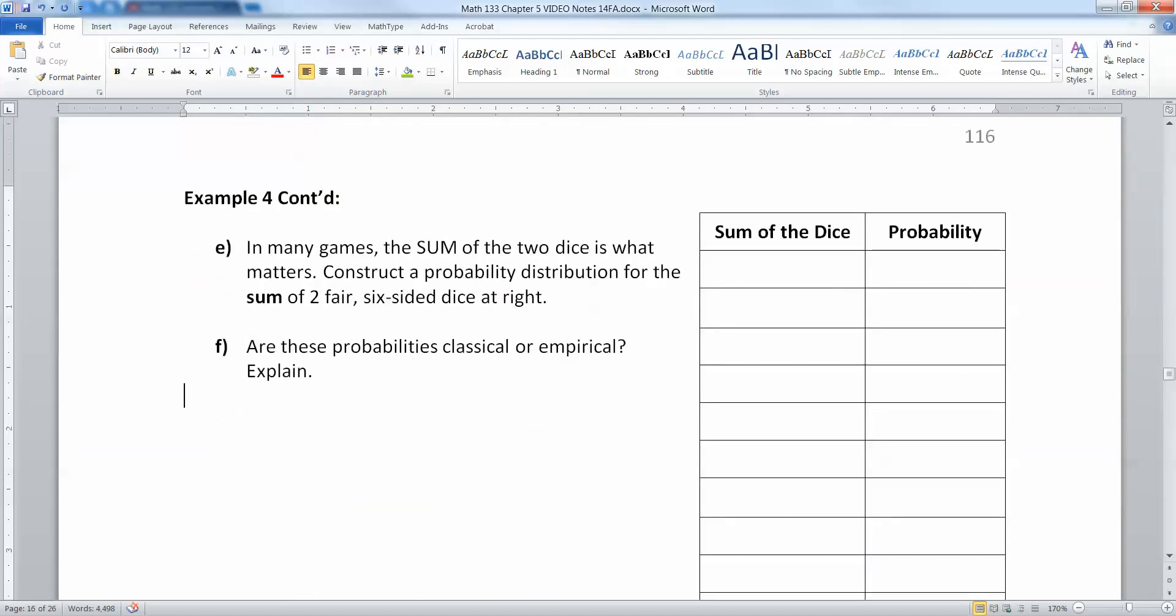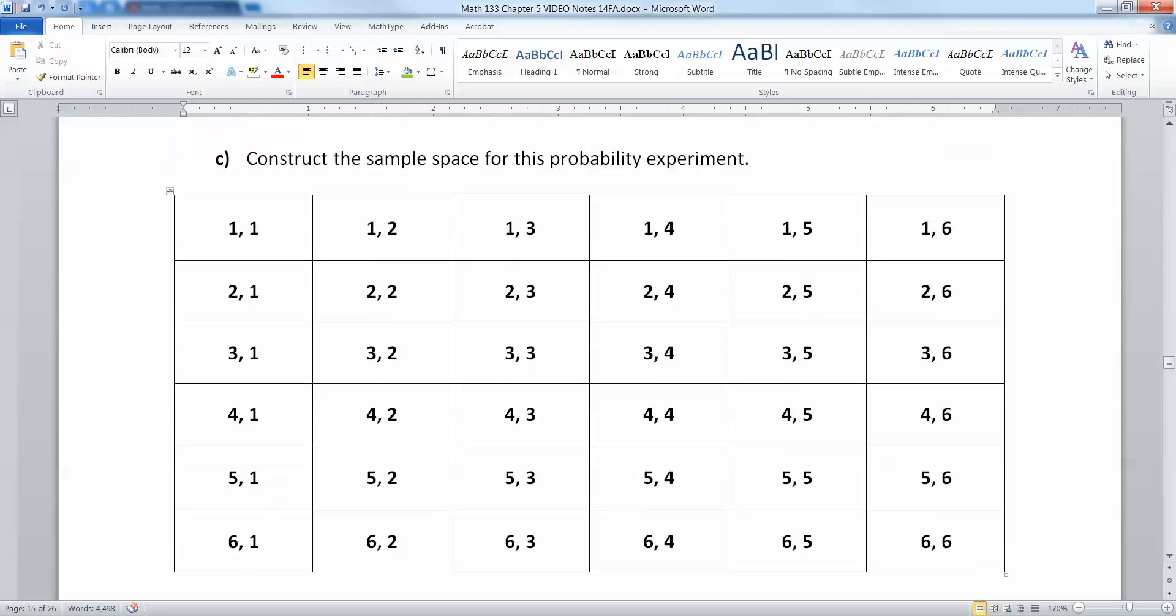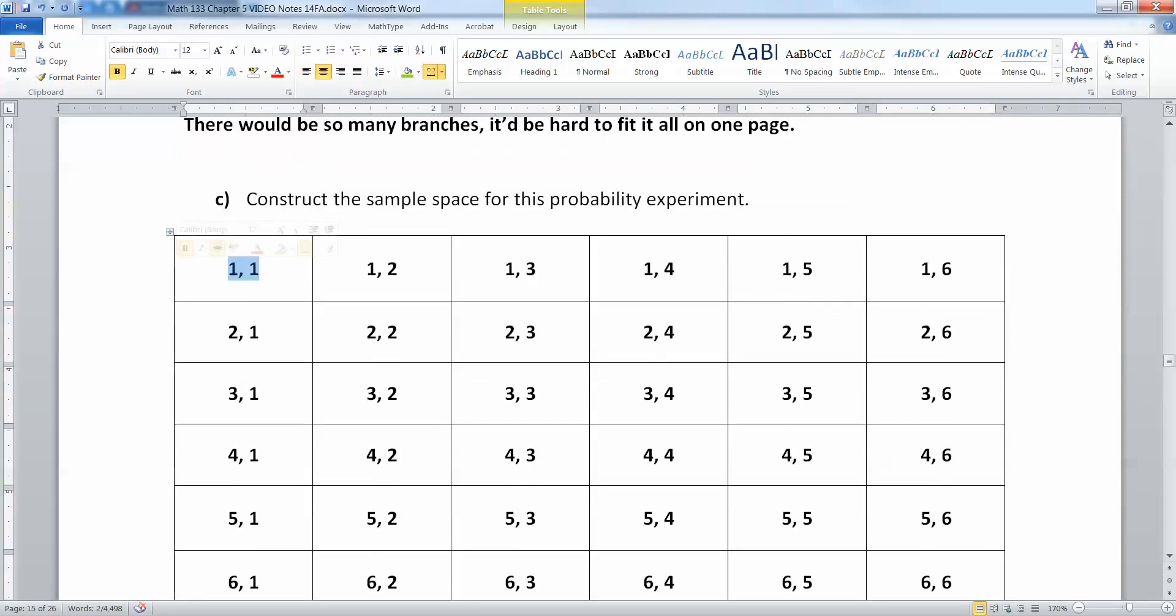So suppose instead of having it so that we just note the sides, but we actually want to sum the dice. So, for example, rolling a one and a one would give you a sum of two. Rolling a one and two would give you a sum of three. Rolling a three and a three would give you a sum of six, and so on.